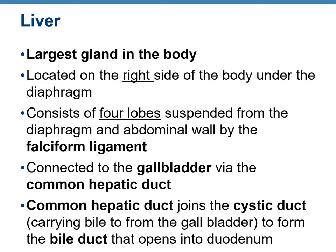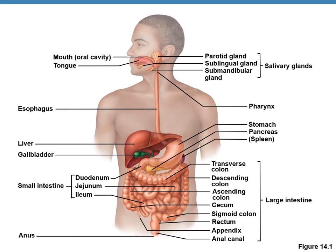The liver is the largest gland in the body, located on the right side of the abdominal cavity under the diaphragm. It consists of four lobes and is suspended from the abdominal wall by the falciform ligament. It is connected to the gallbladder via the common hepatic duct. Bile is made in the liver, stored in the gallbladder, and the common hepatic duct joins the cystic duct to form the bile duct that opens into the duodenum.